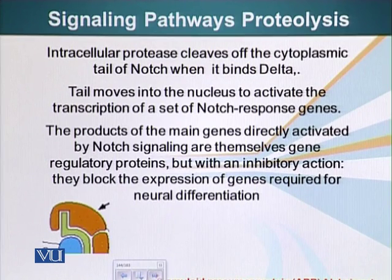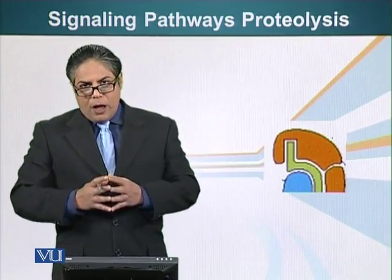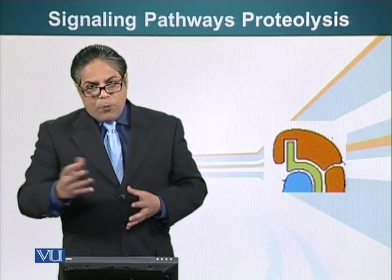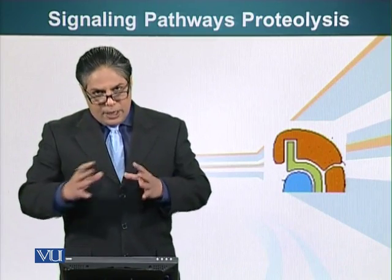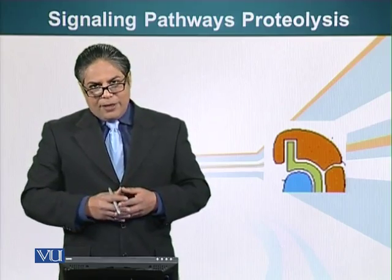It is also worth mentioning that beta-amyloid precursor protein, released by neuronal cells, undergoes a similar type of process in which a protein is cleaved. We have now seen two examples — Wnt and Notch — of signaling systems that mediate their effects through proteolysis, which are especially important during development.